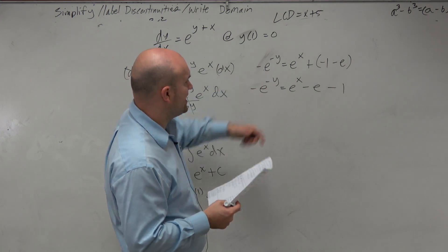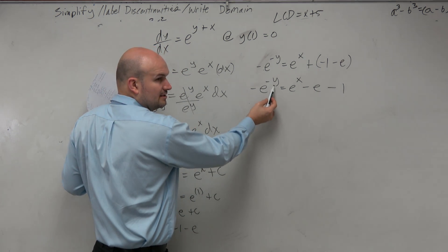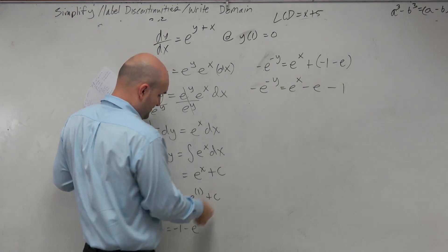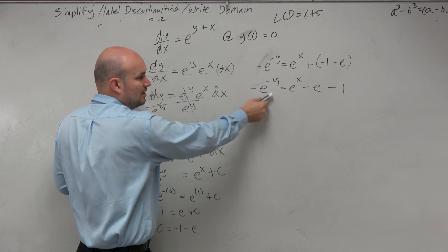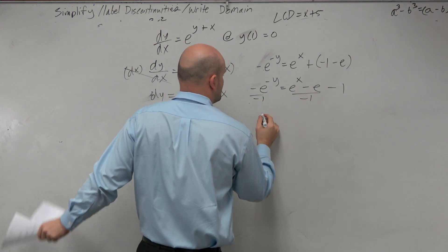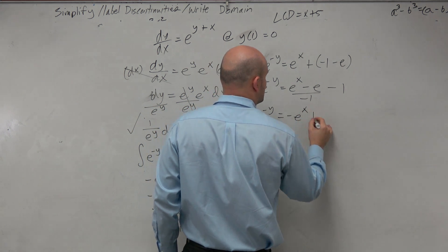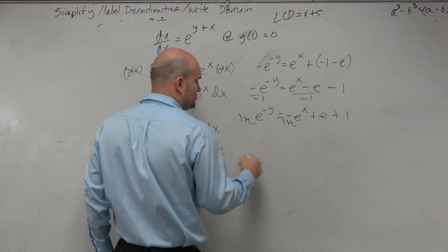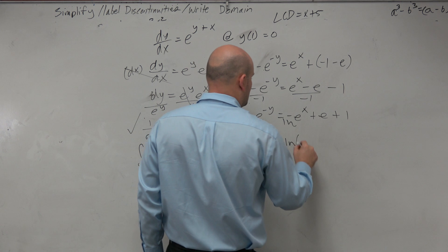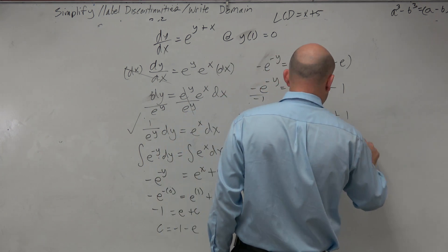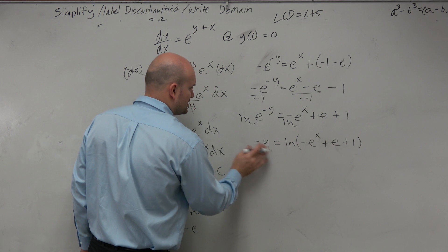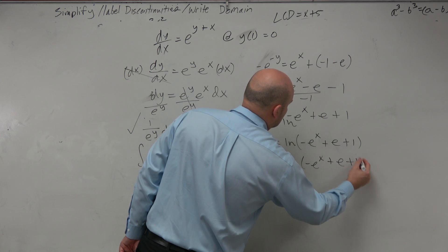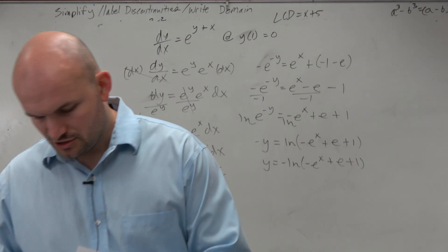We want to go ahead and solve for y. First, let's get rid of this negative, so e to the negative y equals negative e to the x plus e plus 1. To get rid of that e, take the natural log of both sides: negative y equals ln of negative e to the x plus e plus 1. Then divide by negative 1, so y equals negative ln of negative e to the x plus e plus 1. And that is your particular solution — just in time for the bell.